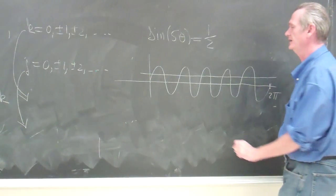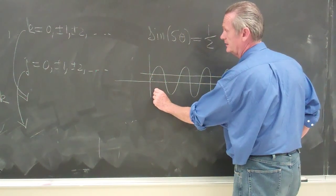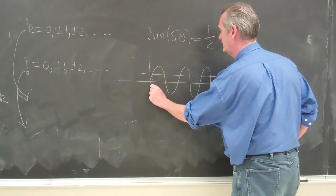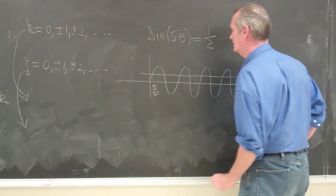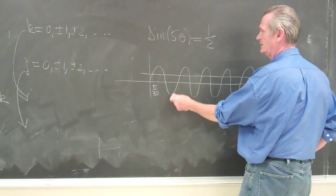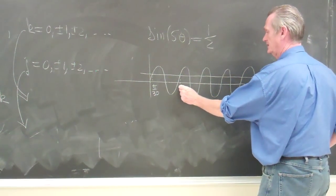And my initial angle here, pi over 30, is right there. Then if I add in 2 fifths of pi, I get to here.